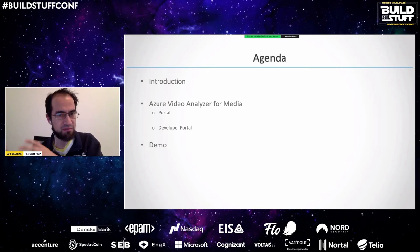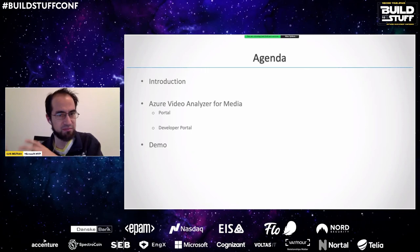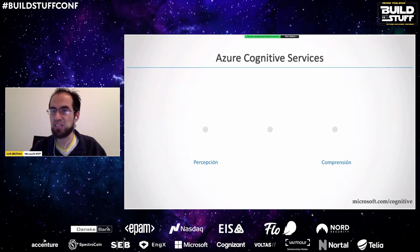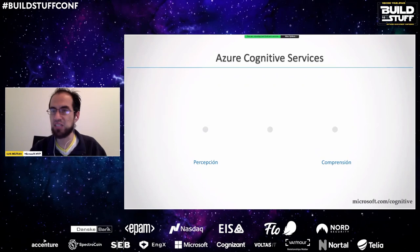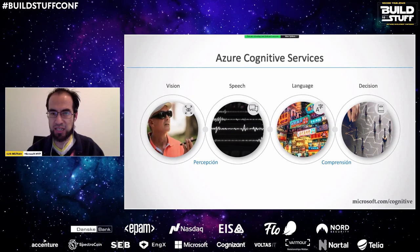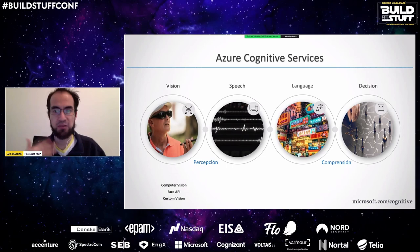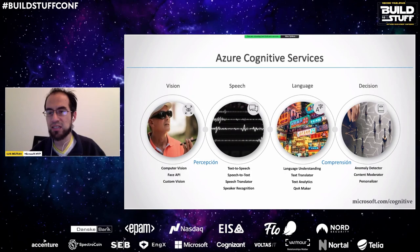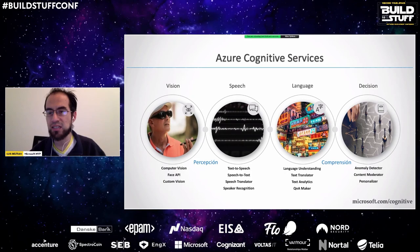Azure Cognitive Services is a suite of services and APIs that already have machine learning pre-built by Microsoft. They enable developers to integrate intelligent features — artificial intelligence such as facial recognition in photos and videos, sentiment analysis in text, and language understanding.